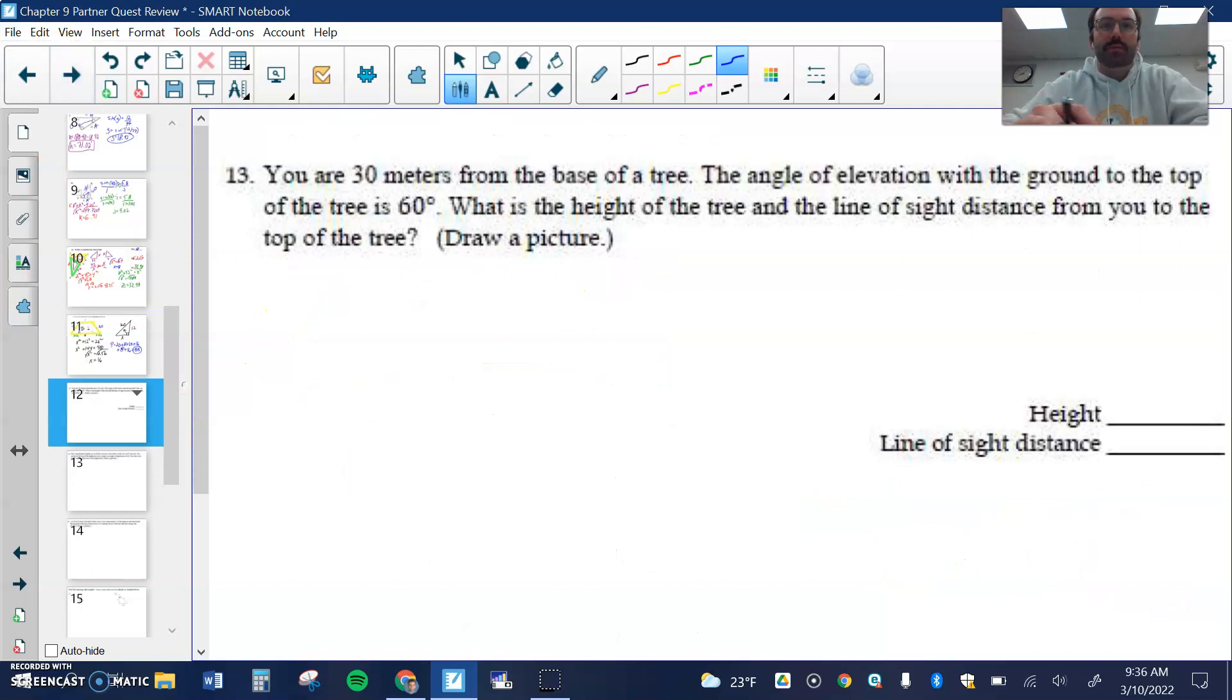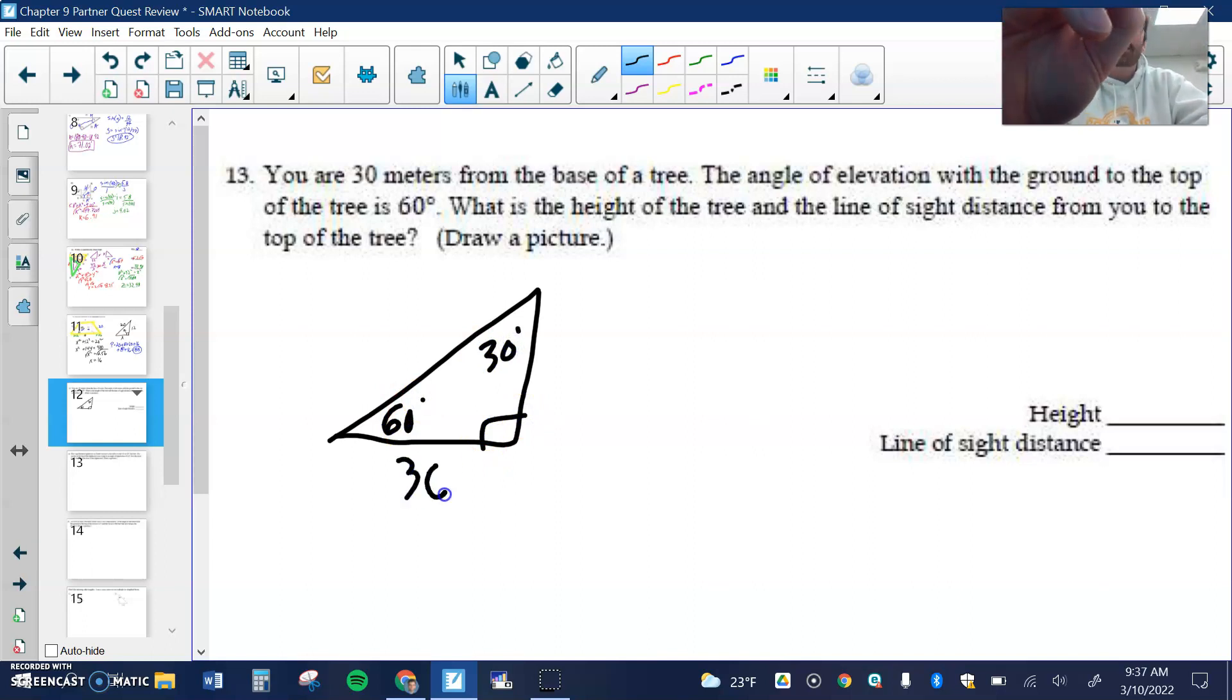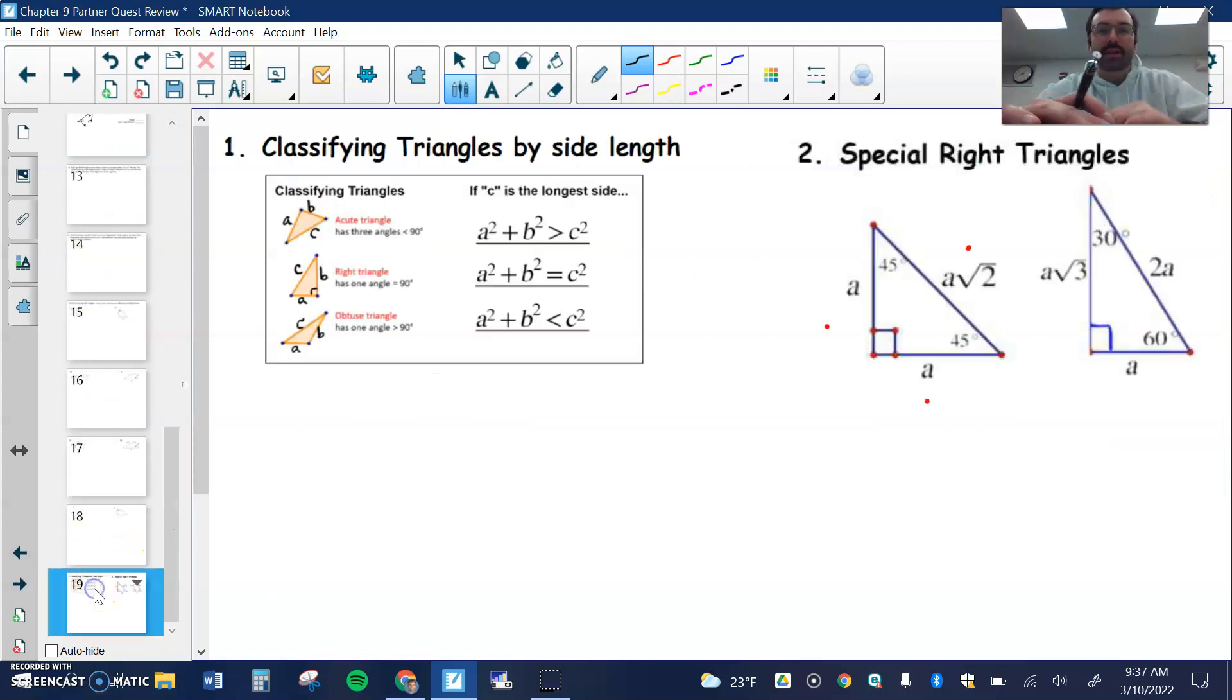Number 11 is a word problem. You are 30 meters from the base of a tree. The angle of elevation with the ground to the top of the tree is 60 degrees. What's the height of the tree? Here is a right triangle, angle of elevation is 60, that means this is 30. You're 30 meters from the base, so I have a 30-60-90 triangle.